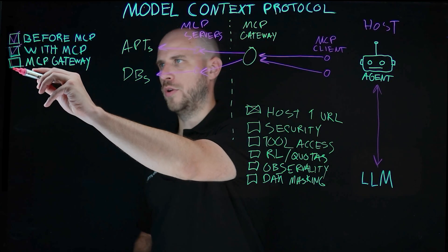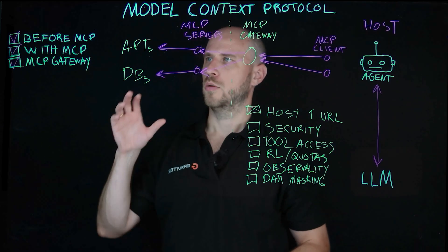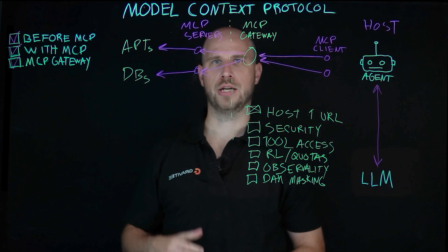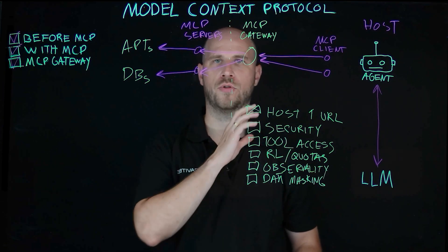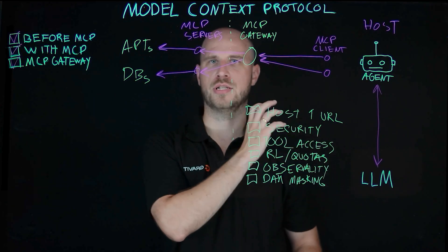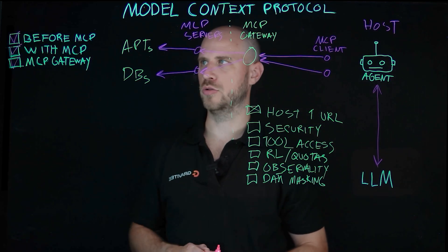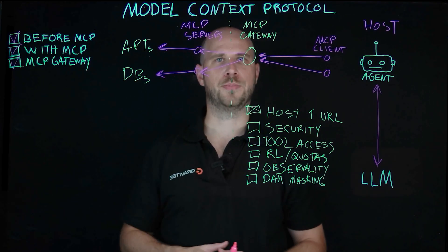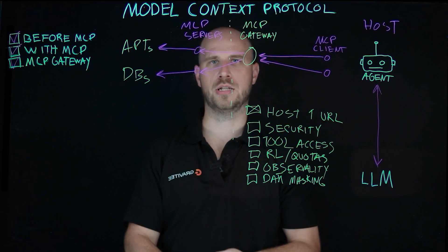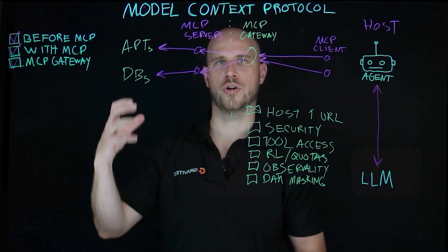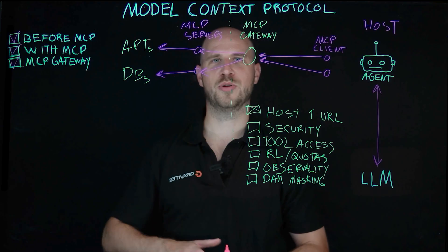So that's pretty much it. We've looked at the challenges that existed before MCP, exactly how MCP solves them by abstracting away the complexity of tool invocation for agent developers and giving LLMs a consistent way to understand what tools are accessible. We also looked at the reasons why an MCP gateway is important for central routing, orchestration, rate limiting, observability, and analytics on top of your existing MCP servers. This was Linus from Gravity — thank you so much for watching, and I'll see you in the next video.